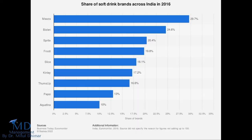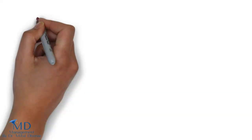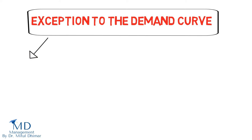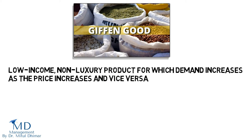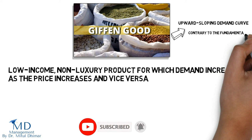Exception to the demand curve. There are some exceptions to the law of demand. These include the Giffen goods, Veblen goods, possible price changes, and essential goods. A Giffen good is a low income, non-luxury product for which demand increases as the price increases and vice versa. A Giffen good has an upward sloping demand curve, which is contrary to the fundamental laws of demand which are based on a downward sloping demand curve. For example, bread or rice is a Giffen good. A luxury car is a Veblen good. Salt is an essential good.